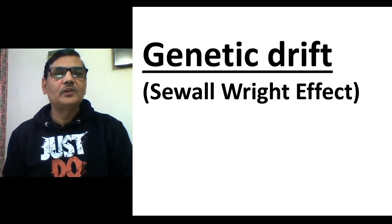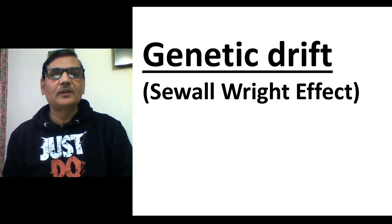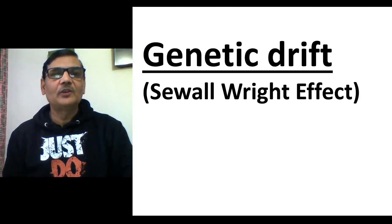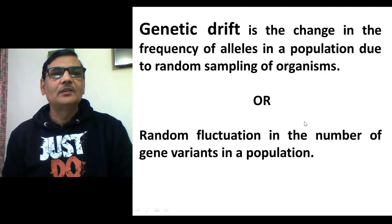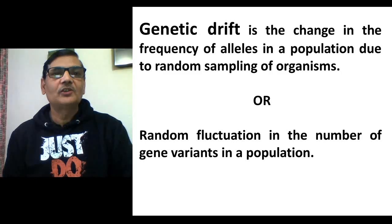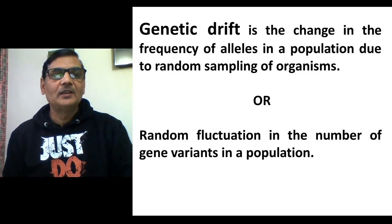Genetic drift, also known as the Sewall-Wright effect, is one of the evolutionary forces that influences allele frequency of a population. Genetic drift is the change in the frequency of alleles in a population due to random sampling of organisms. That is why it is also referred to as random genetic drift — it represents random fluctuation in the number of gene variants in a population.